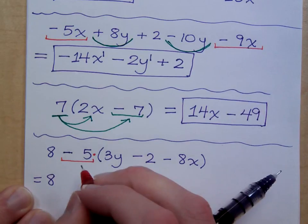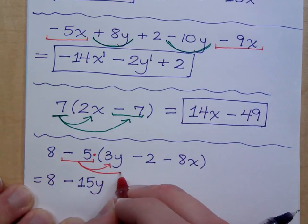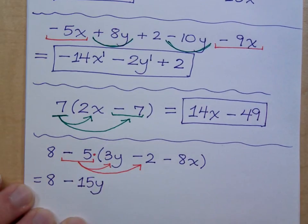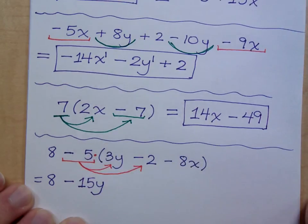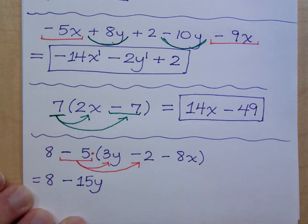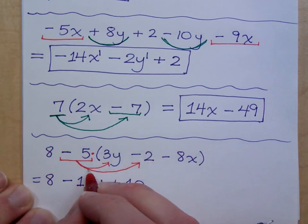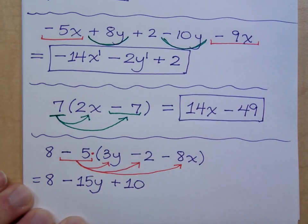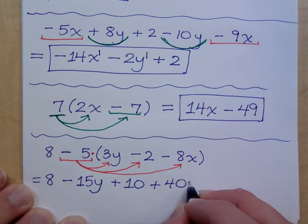So when I write this problem, I have 8. Now what happens when I distribute the negative 5 to the 3y? Negative 15y. Now you're going to see where taking that negative 5 as a whole is going to be important to you. What's negative 5 distributed to the negative 2? Look at what you're doing. What's negative 5 times negative 2? Positive 10. And then I have the negative 5—excuse me, I have negative 8x. What is that? That's positive 40x.